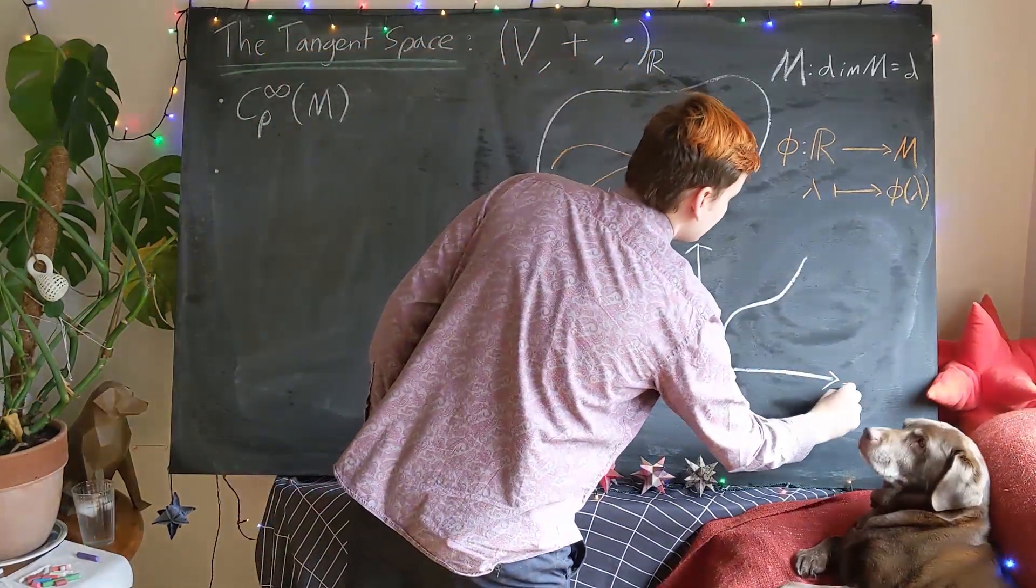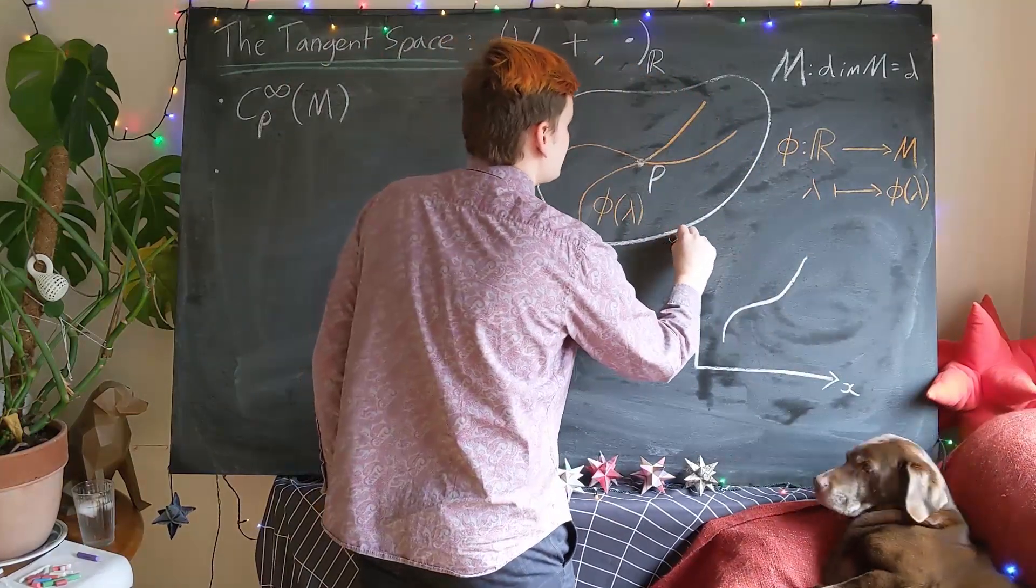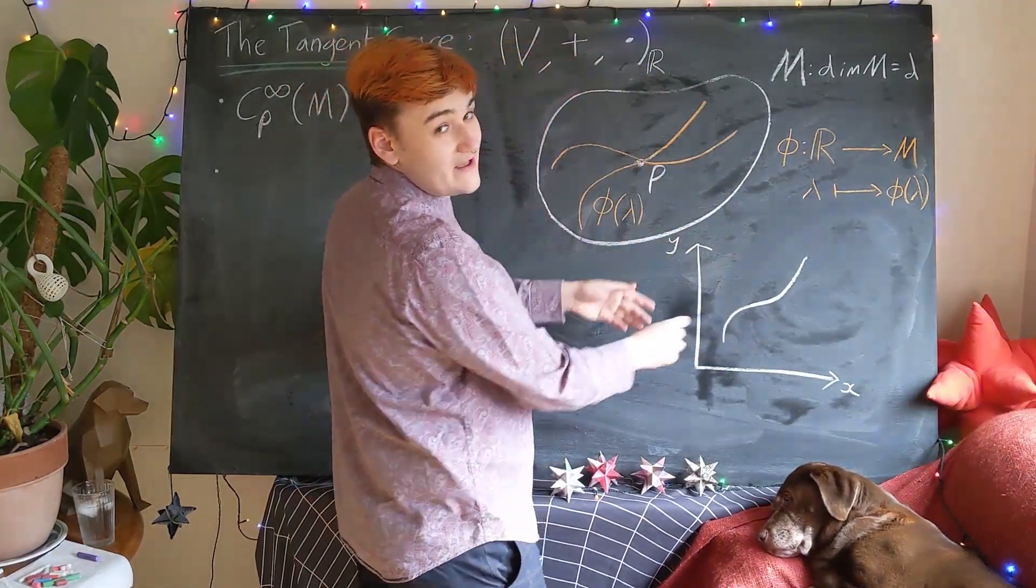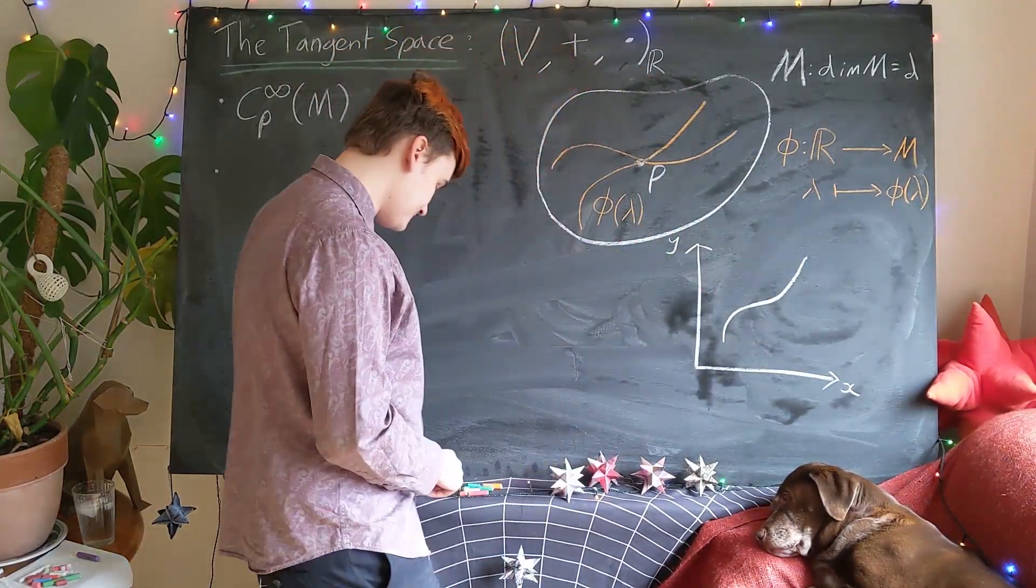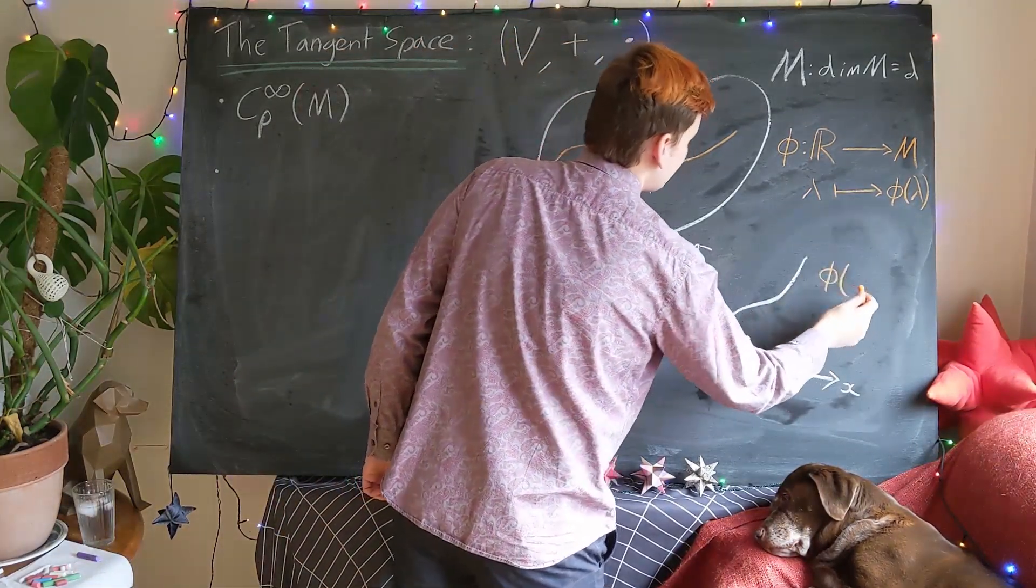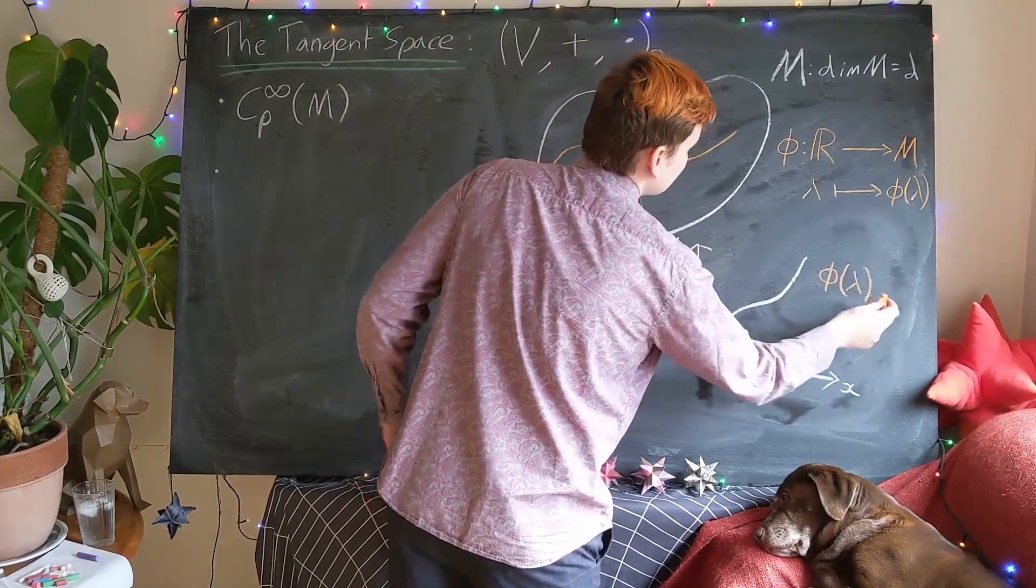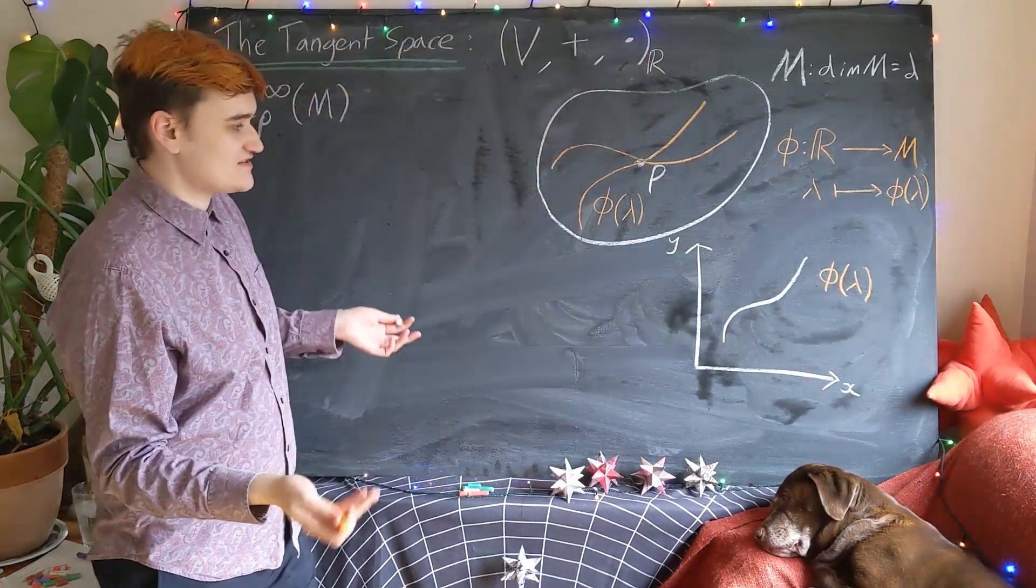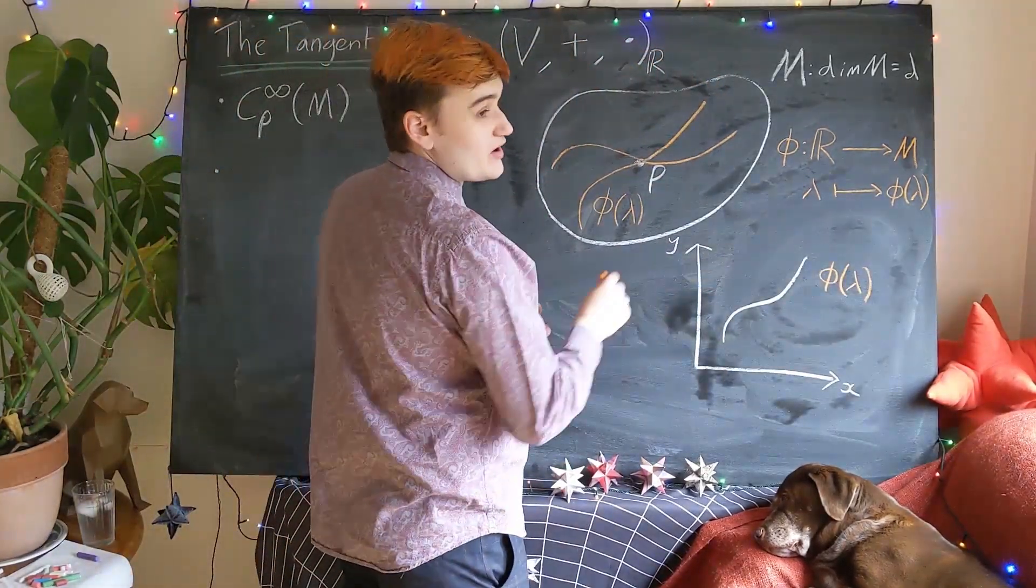imagine that this is describing the trajectory of some particle moving in the x-y plane. This curve, which I've drawn, is just some parametrized function of lambda. We might usually like to think of lambda as being time if we're talking about particle trajectory.